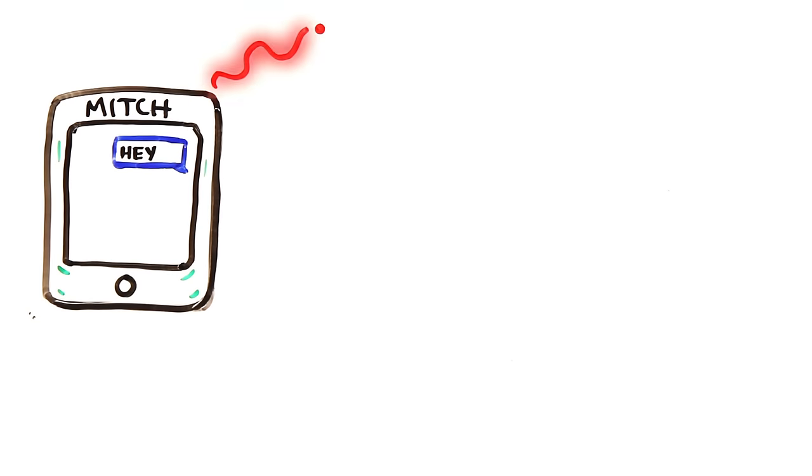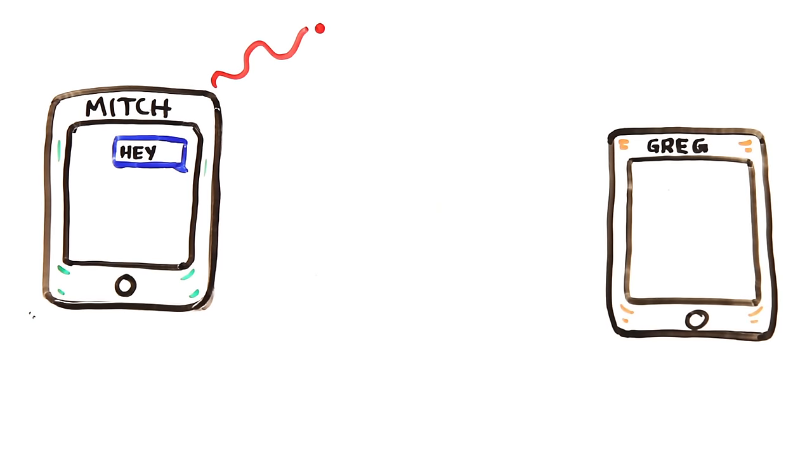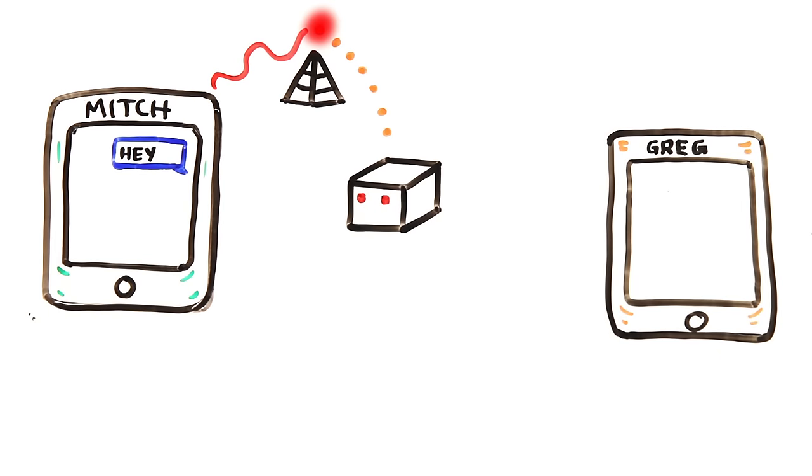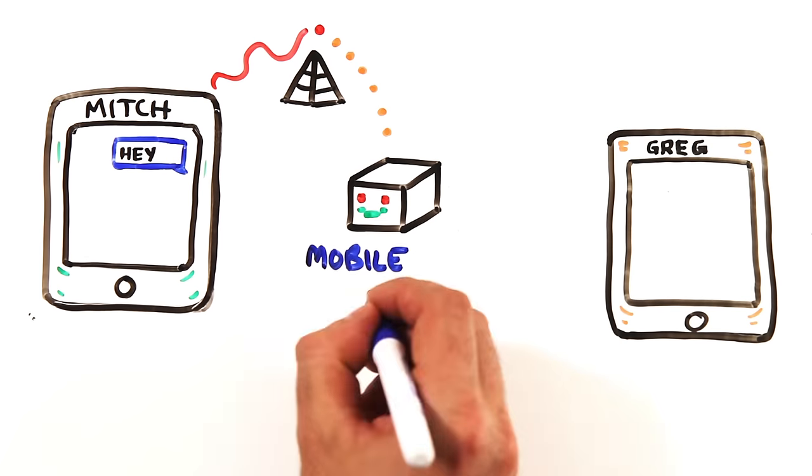Whenever someone sends you a text, their phone transmits radio signals, which convey the identity of both their phone and yours, along with the content of the message. These signals are then picked up by the tower closest to them, which converts the radio waves into a digital electrical impulse and passes it along to a hub of the network called a mobile switching center.